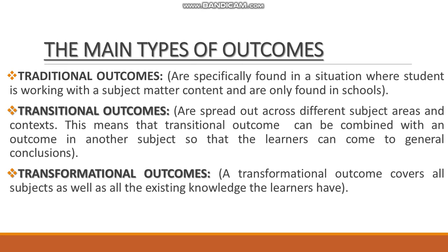Now let's move on to the main types of outcomes. We have three types of outcomes: the traditional outcomes, transitional outcomes, and transformational outcomes. Traditional outcomes is when students demonstrate a specific subject content learned at school or in the classroom setting. This can be done by reading a passage out loud or reciting a poem to demonstrate English or Chivayanda language skills. A learner could also be asked to create a poster to demonstrate their understanding about the content.